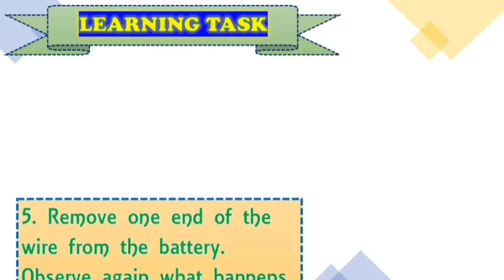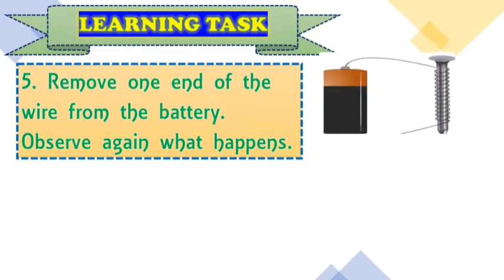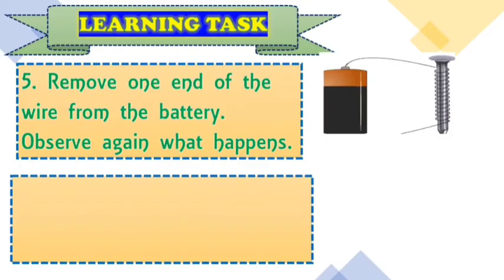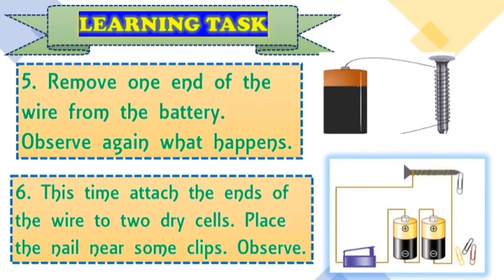Number five is remove one end of the wire from the battery. When we remove one end, leaving only the positive connected, observe again what happens. What will happen when one is removed? Will it weaken or what? Number six, this time, attach the ends of the wire to two dry cells. Place the nail near some clips and then observe. What will happen when we have two batteries? What happened? So, I think you learned something today.